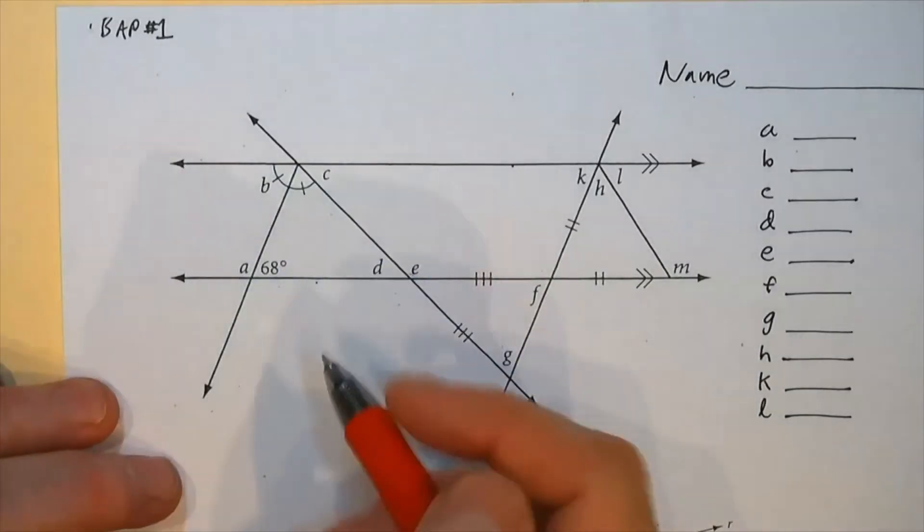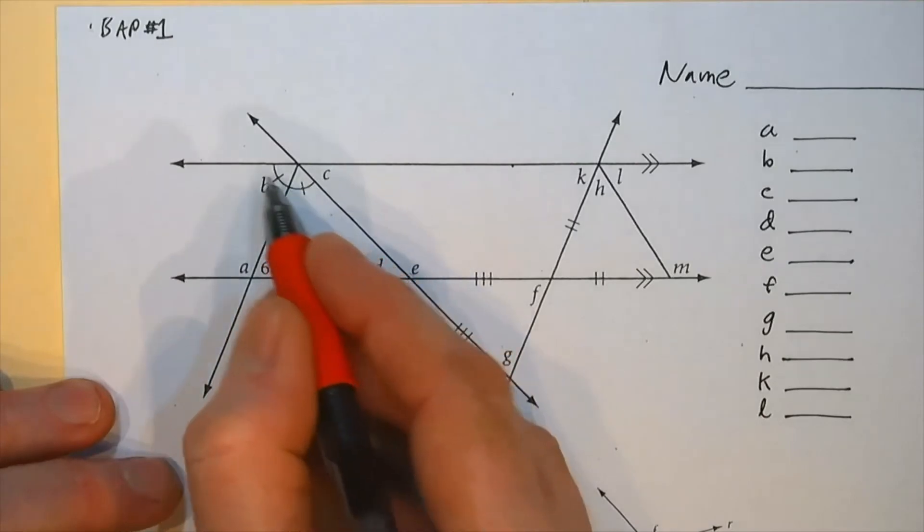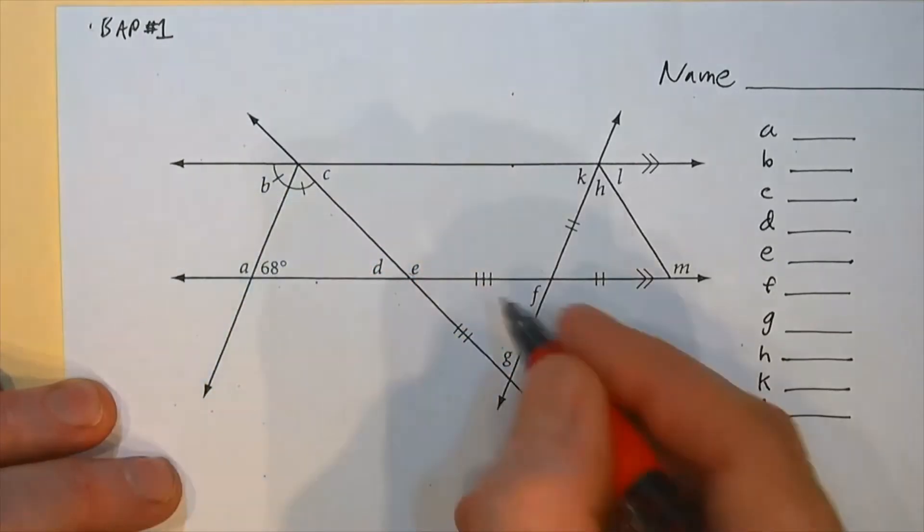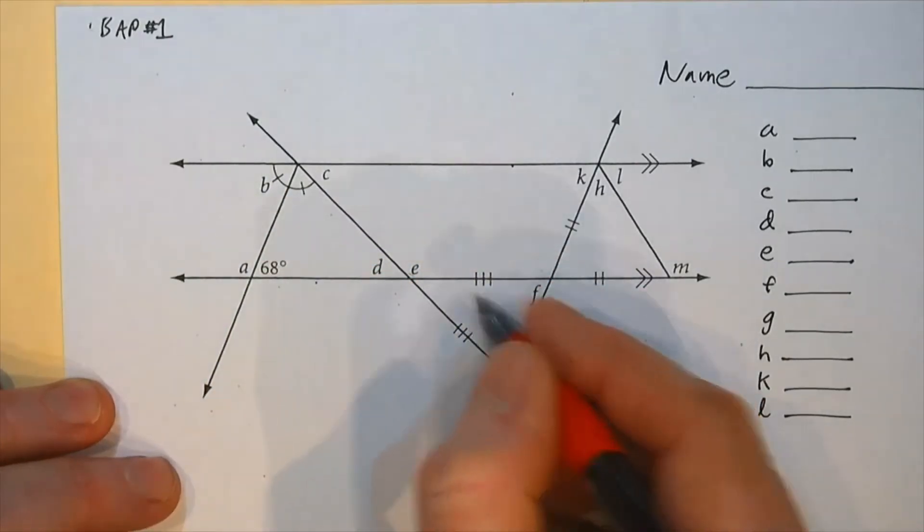But as you look at these, look at the markings like, hey, these two angles are the same. Too bad I don't know them. And these two sides are the same. What does that tell me?